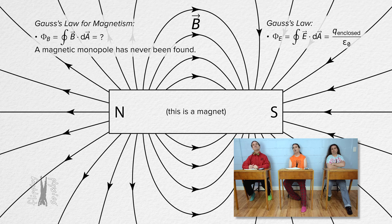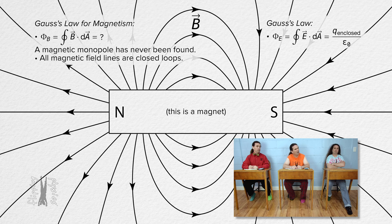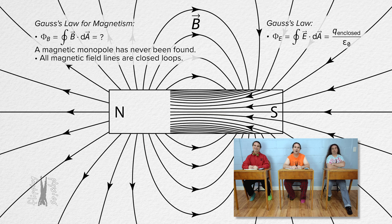Sure. Because magnetic poles always come in pairs, magnetic field lines are always closed loops. That means that inside the magnet, the magnetic field lines go from south to north to complete the closed loops.